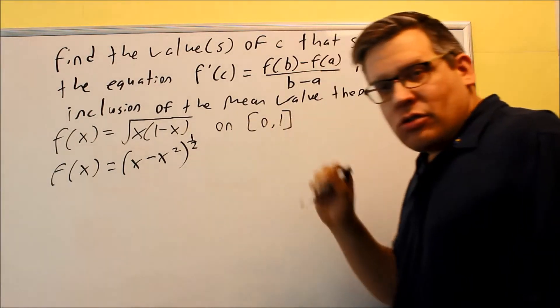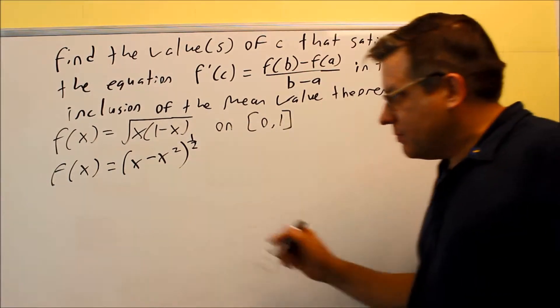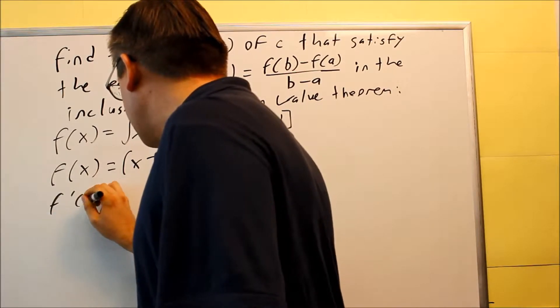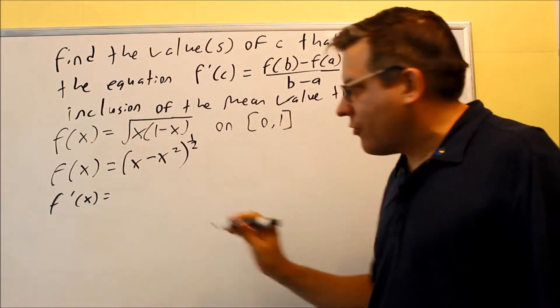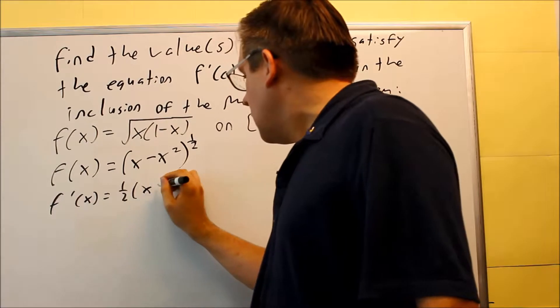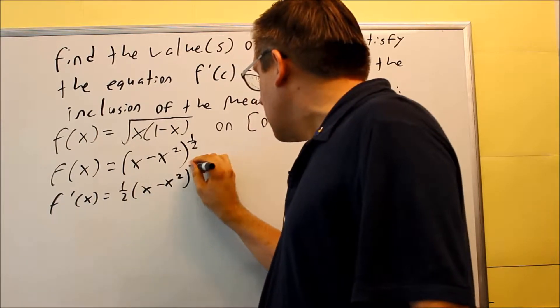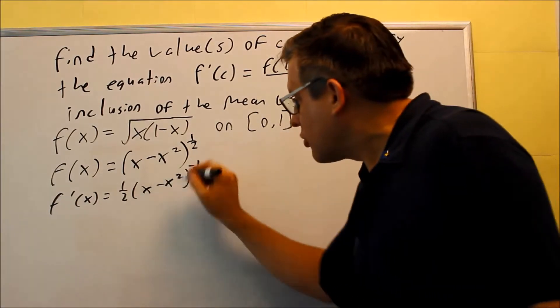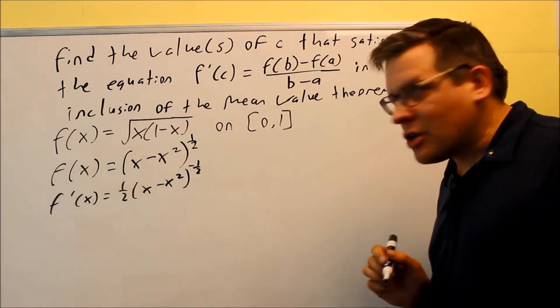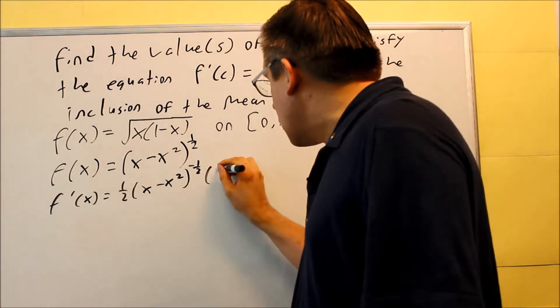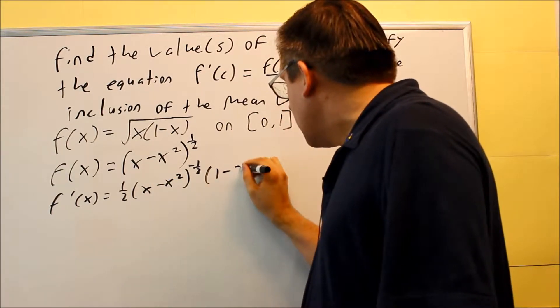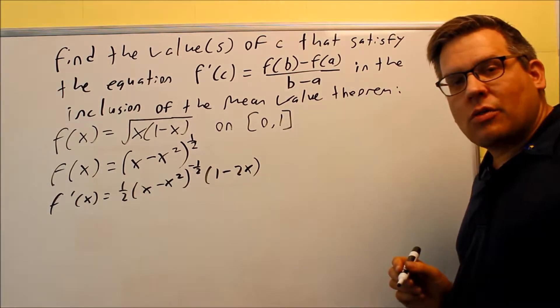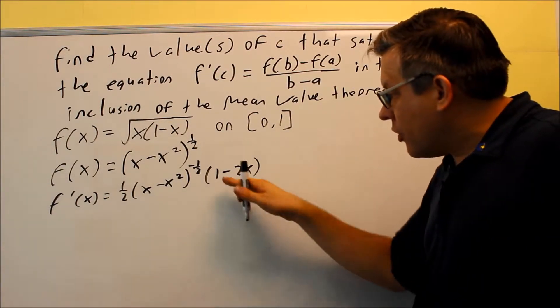So now I need to do a chain rule. One half comes down first. I have x minus x squared. Subtract 1 from the exponent. But with chain rule, don't forget, you want to also multiply it by the derivative of the inside. The derivative of the inside is 1, don't forget the 1 there, minus 2x. So 1 minus 2x is going to be your derivative.